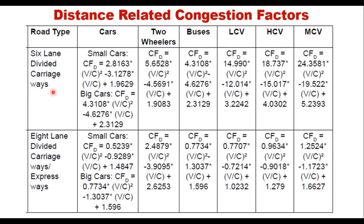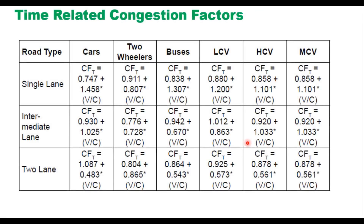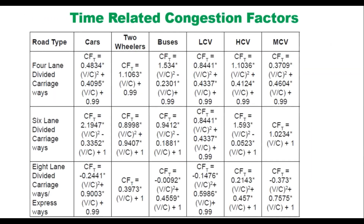Equations are also available for 6-lane divided carriageway, 8-lane divided carriageway, or expressways. Similarly, you have time-related congestion factors for different types of road sections and different categories of vehicles, calculated based on the V/C ratio. One table covers single lane, intermediate lane, and 2-lane roads; another covers 4-lane, 6-lane, and 8-lane divided carriageways or expressways.